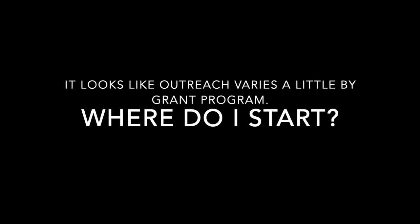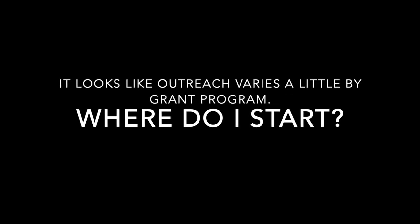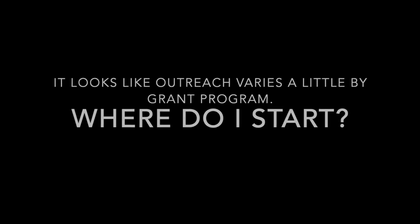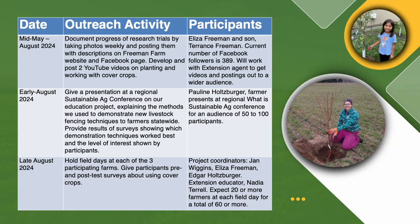We're going to go over a couple of tips for how to make a strong outreach section. First, let's talk about farmer rancher grants, because going through an example of an outreach plan that's in the call for proposals will actually let us see some tips that apply to all of our grants. It shows the date of the activity, what they're going to do, and who they want to participate.